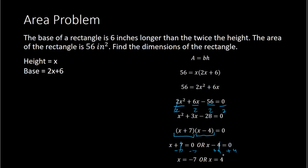The question is which solution to use. Looking at the context, we are dealing with the dimensions of a rectangle, and height and base must be positive — there's no such thing as a negative height. So negative 7 is not a valid solution. Therefore x equals 4 for the height. The base is 2 times 4 plus 6, which is 14. So the height is 4 inches and the base is 14 inches.